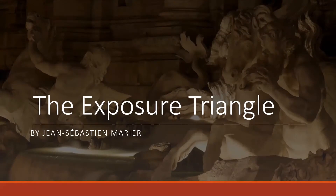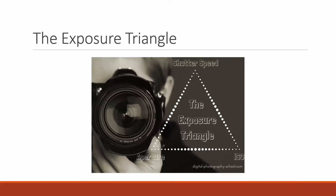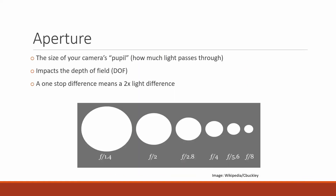In this video we'll talk about the exposure triangle. In a nutshell, the exposure triangle consists of three parameters which allow any camera — whether it's your cell phone or a professional DSLR — to take in light and turn it into an image. The three main elements are the shutter speed, the ISO, and the aperture.